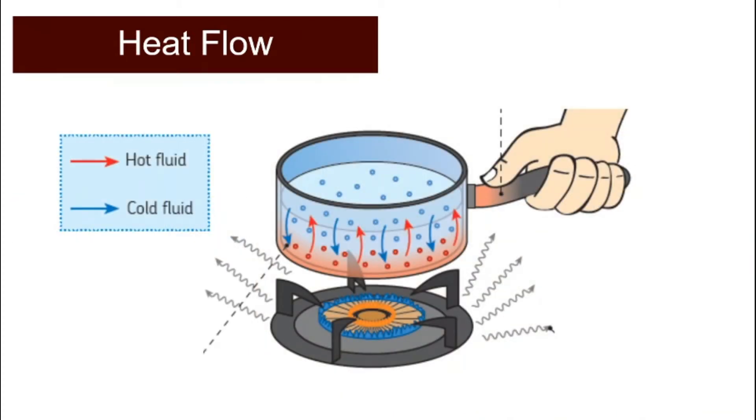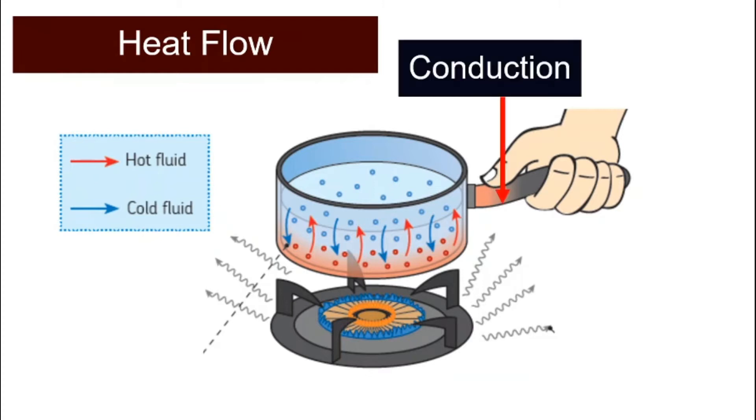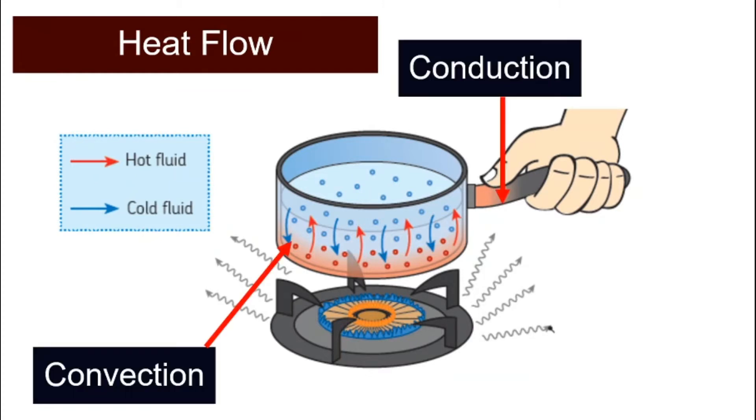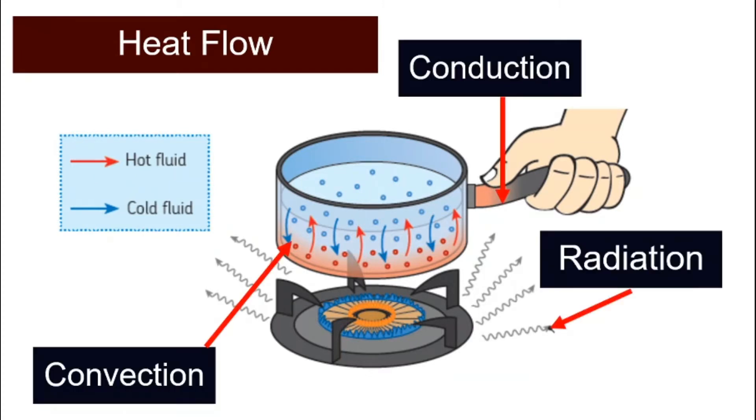So what are the three ways that heat can flow? Conduction, convection, and radiation. What are the differences? What are they? Let's look at them one by one.